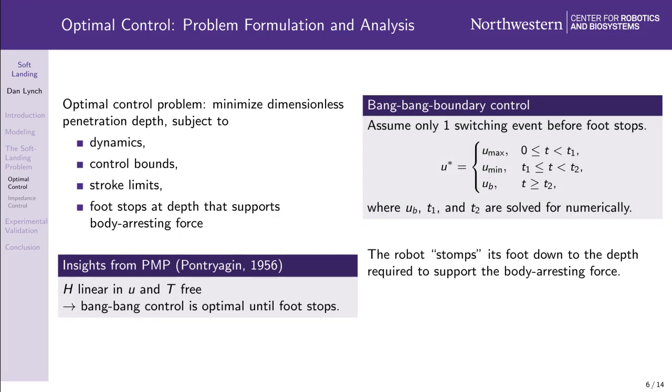We assume one switching event during the bang-bang phase. Once the foot stops, the body arresting force is constant, and is a function of the body velocity and the remaining stroke at the end of the bang-bang phase. The body arresting force must not pull the foot off the ground, nor may it push the foot further into the ground. The result is a three-phase open-loop force control policy, in which the robot stomps its foot down to the minimum depth required to support the body arresting force. If the foot under-penetrates, the ground will not support the body arresting force, and when the ground yields, the foot will sink deeper than necessary. On the other hand, if the foot over-penetrates, the ground will support more force than the minimum required body arresting force, which is again suboptimal.